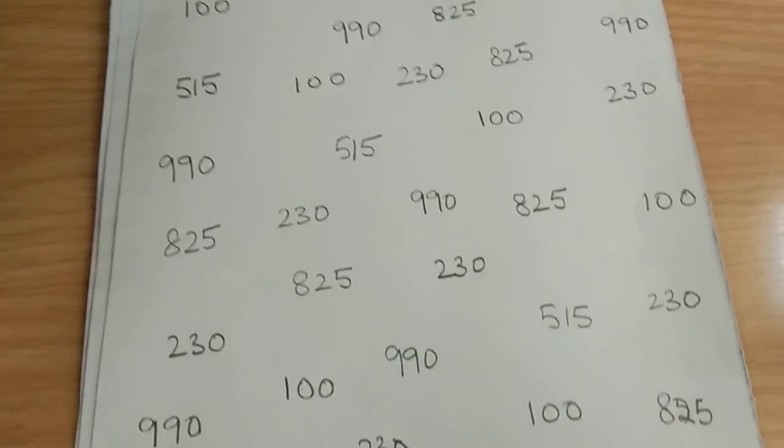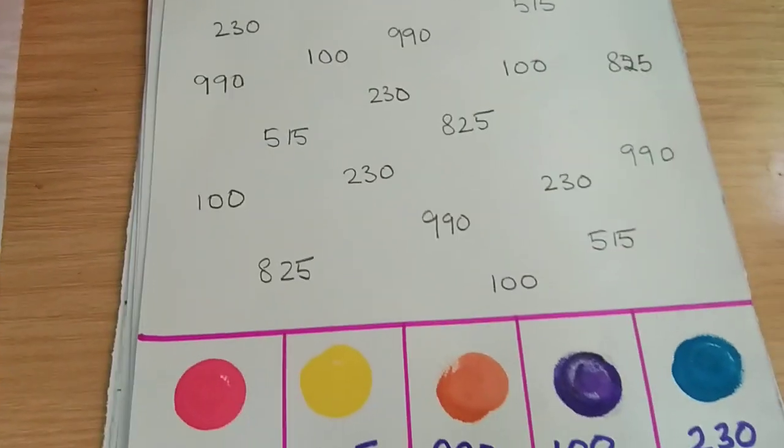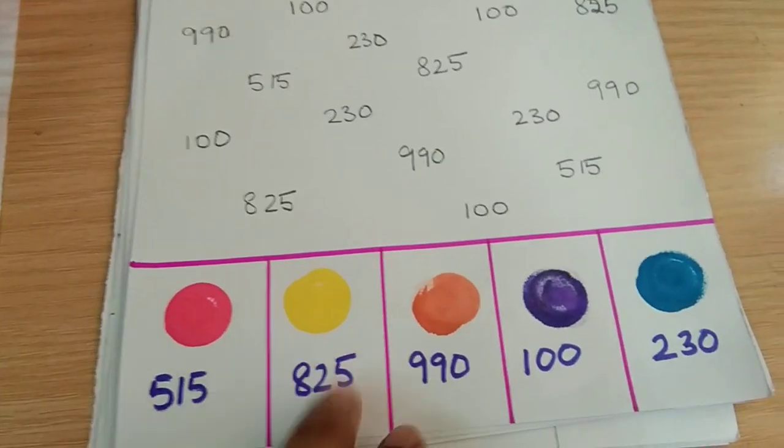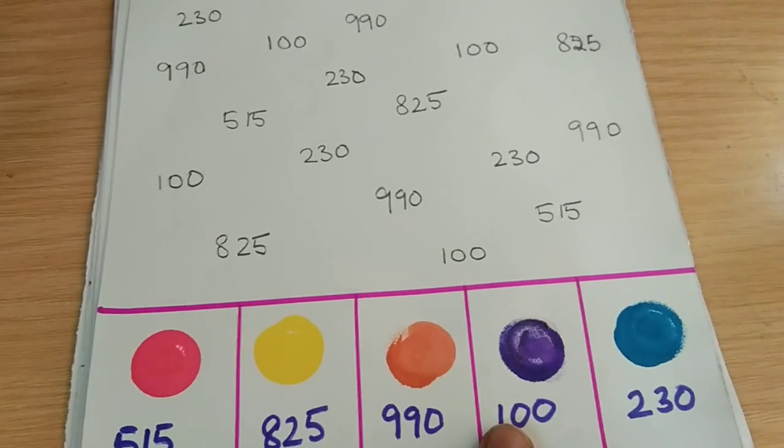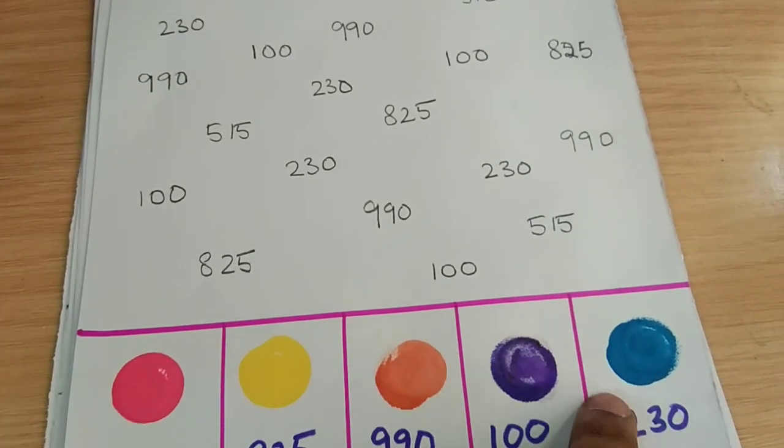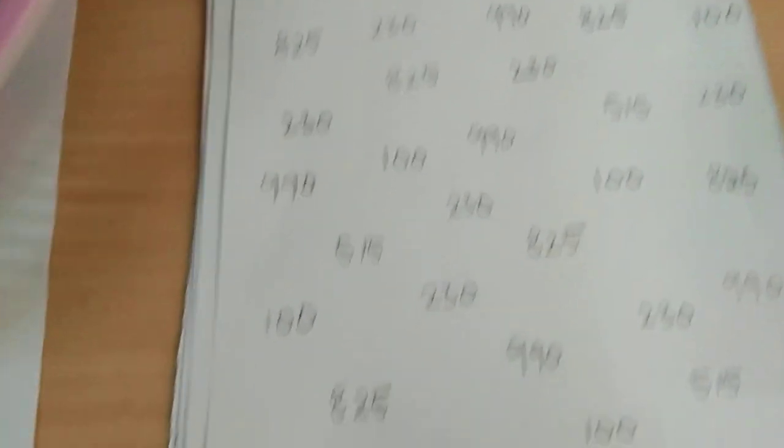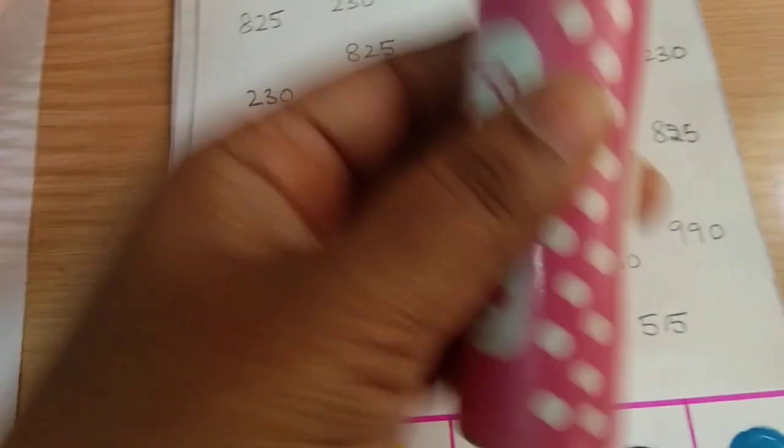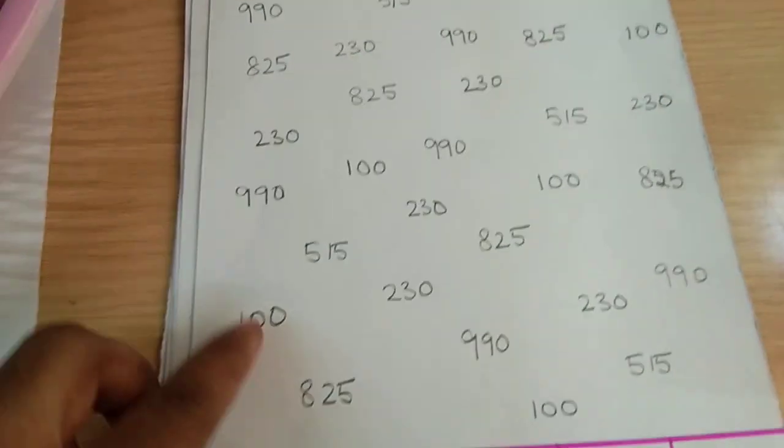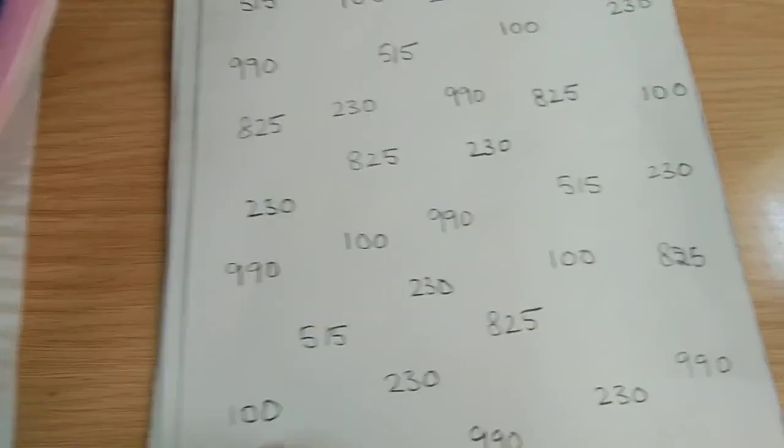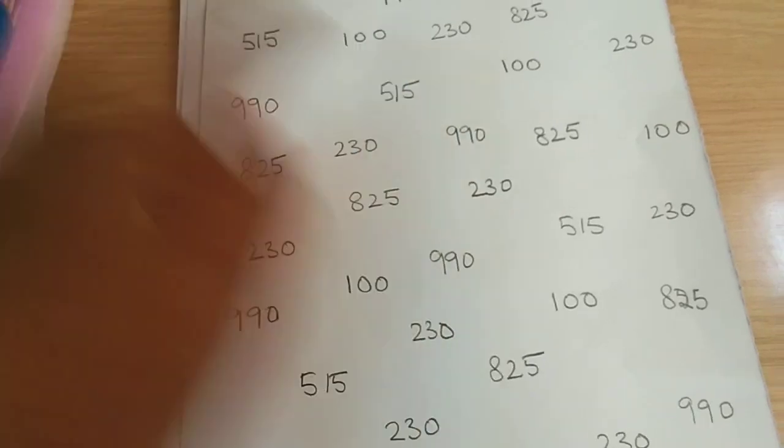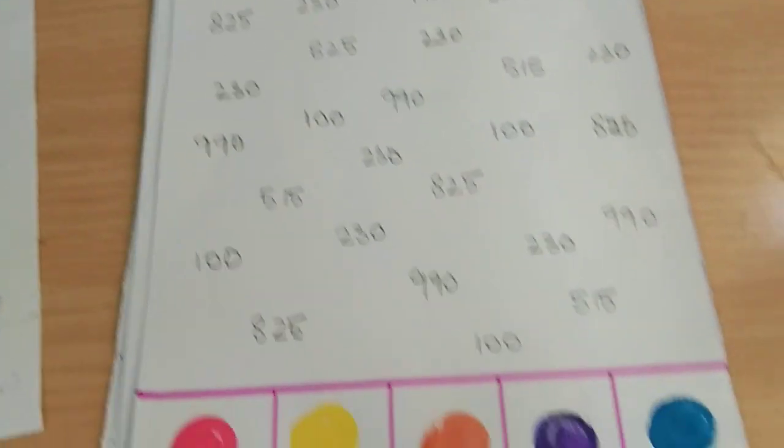I asked Rithvik to randomly say some three digit numbers and these numbers were said by him. I have put these numbers here and then given a color code for each number. The child has to find the number, and wherever it is 515 he'll have to take the pink dot marker and stamp it wherever 515 is. Similarly he's going to complete the rest of the sheet.